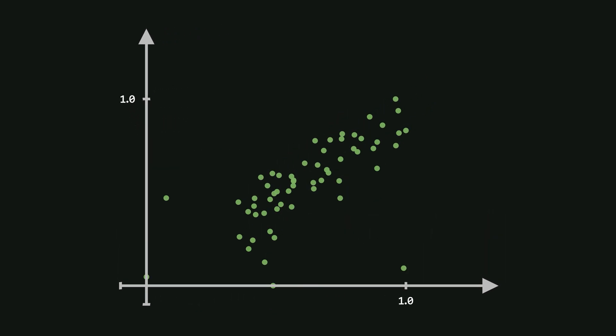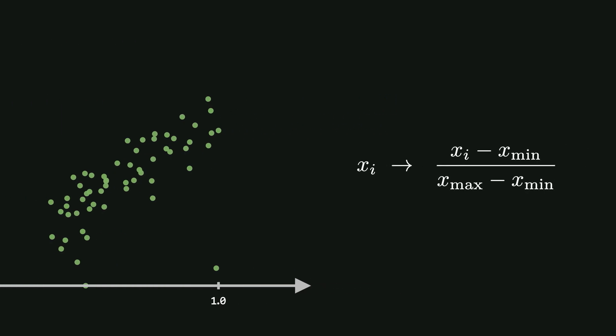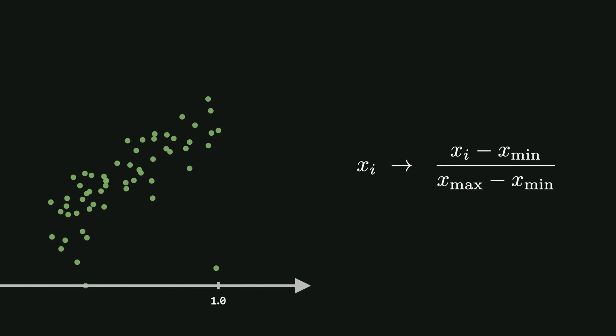Each feature is scaled proportionally, so the relative difference between data points are preserved. The formula for min-max normalization looks like this. Here, xi is a single data point for one feature, and min x and max x are the minimum and maximum values of that feature in the data set.